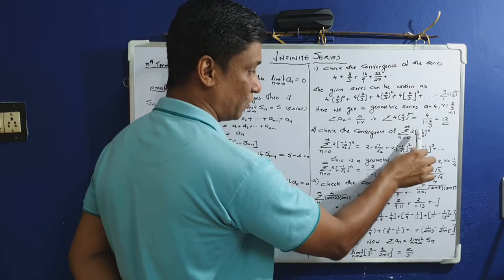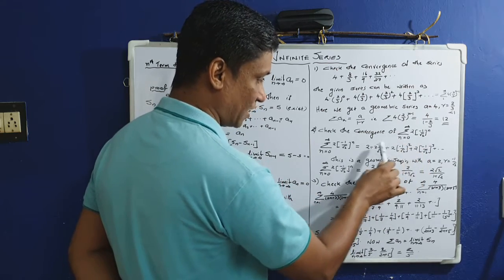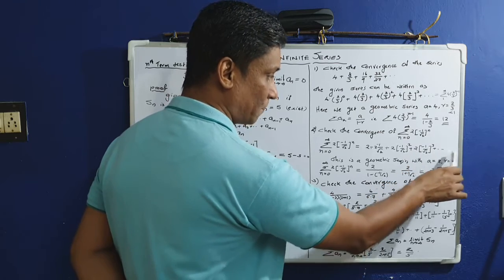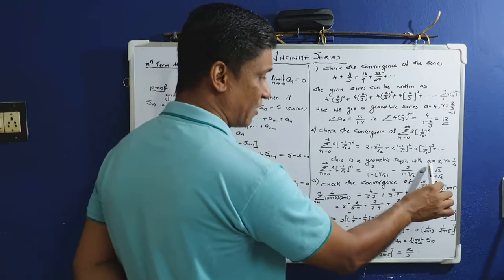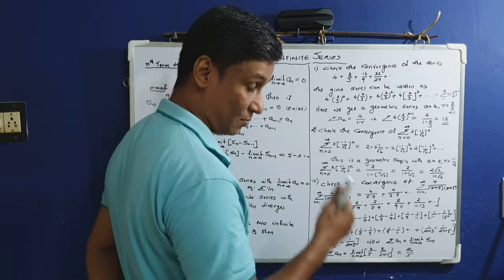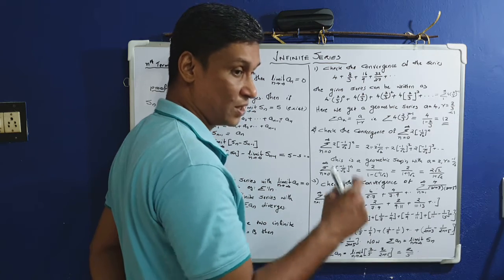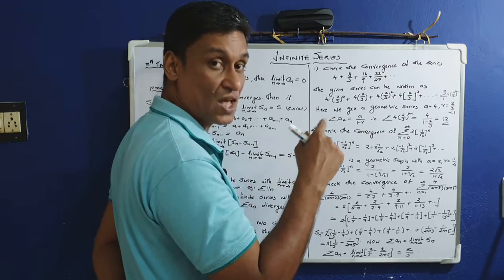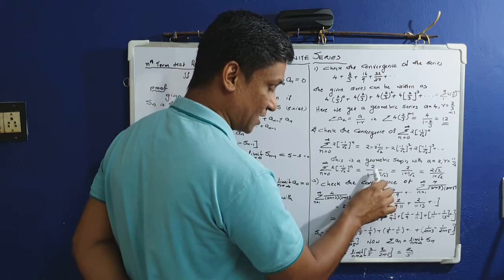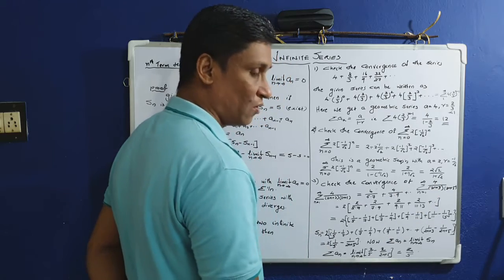Problem 2: check the convergence of sigma from n=0 to infinity of 2·(-1/√2)^n. Expanding: 2 + 2·(-1/√2) + 2·(-1/√2)^2 + 2·(-1/√2)^3 + ... This is a geometric series with A = 2 and R = -1/√2. Since |R| = 1/√2 ≈ 1/1.414 < 1, it converges. The sum is A/(1-R) = 2/(1-(-1/√2)) = 2/(1 + 1/√2) = 2√2/(1 + √2).